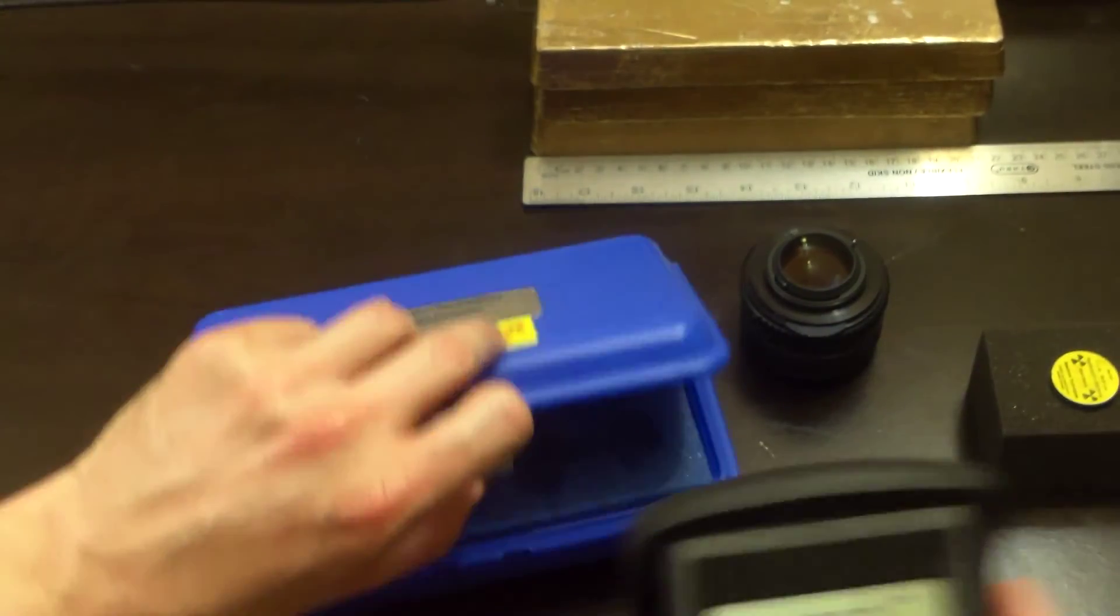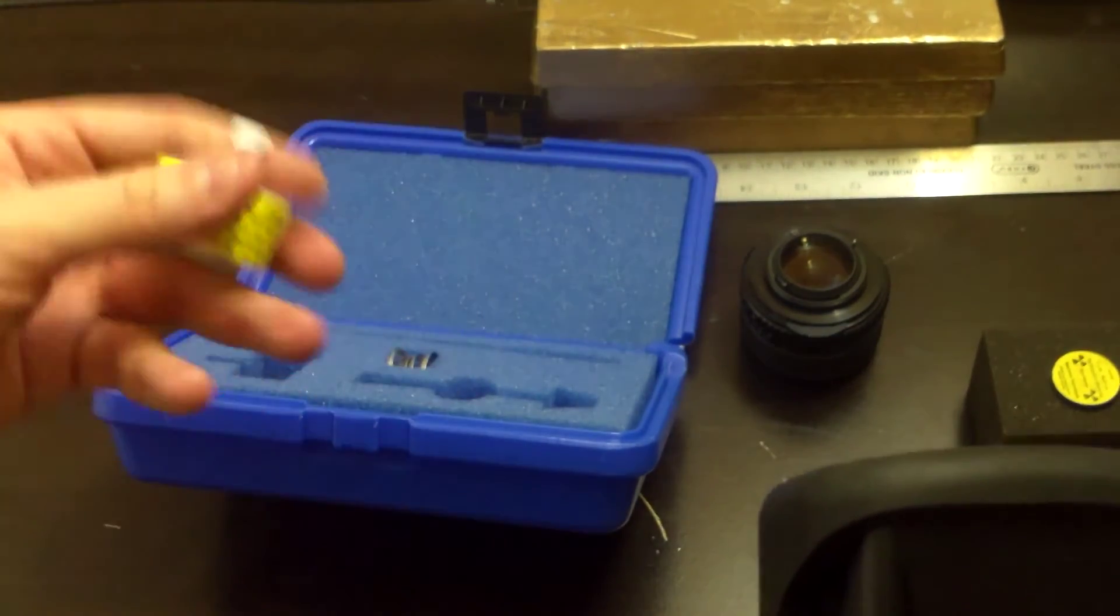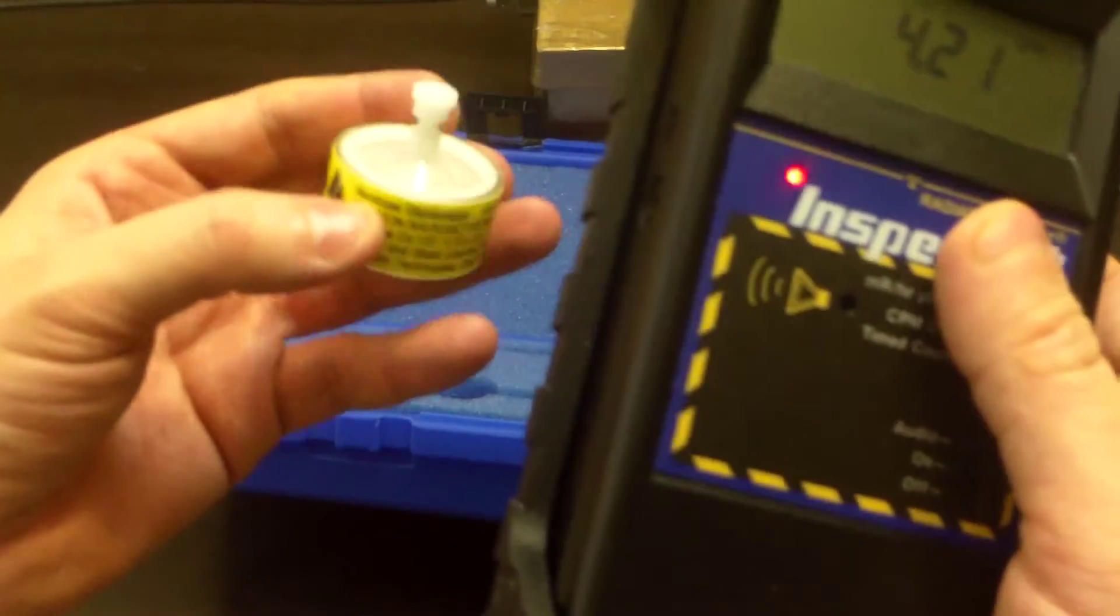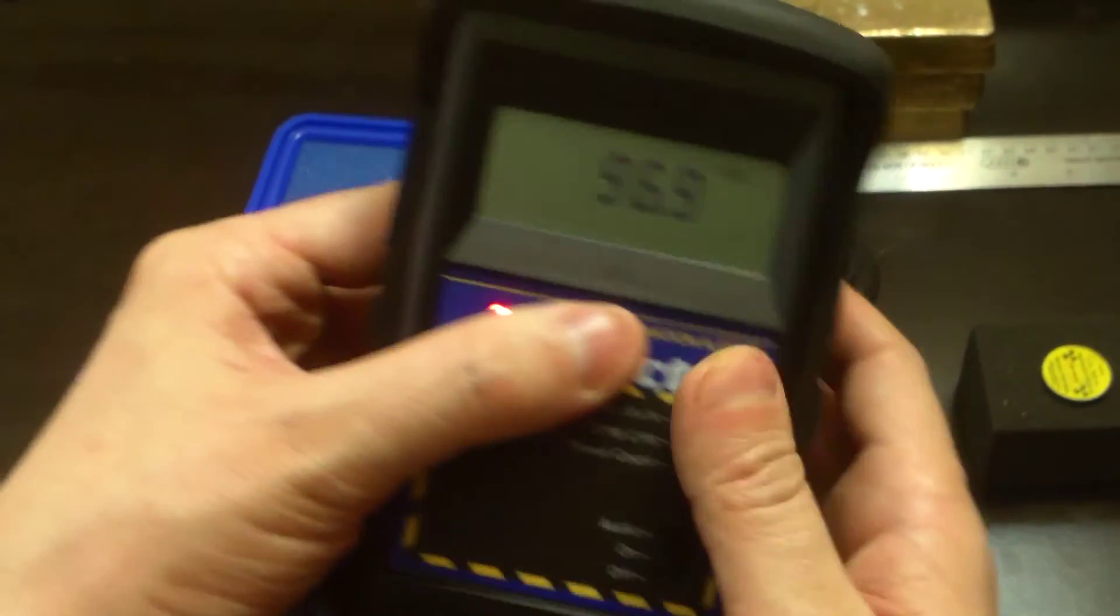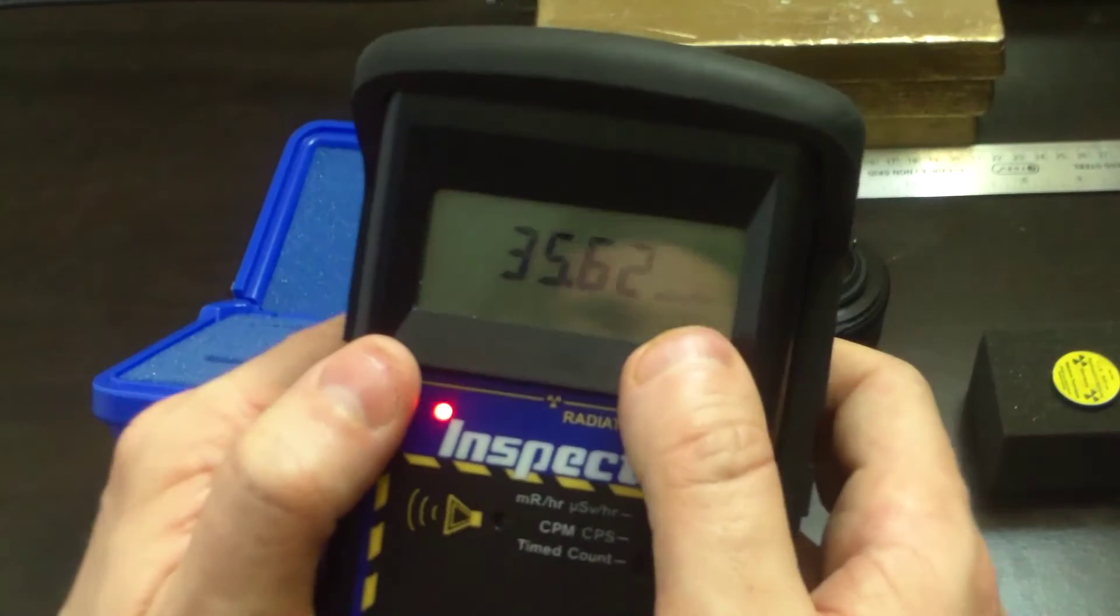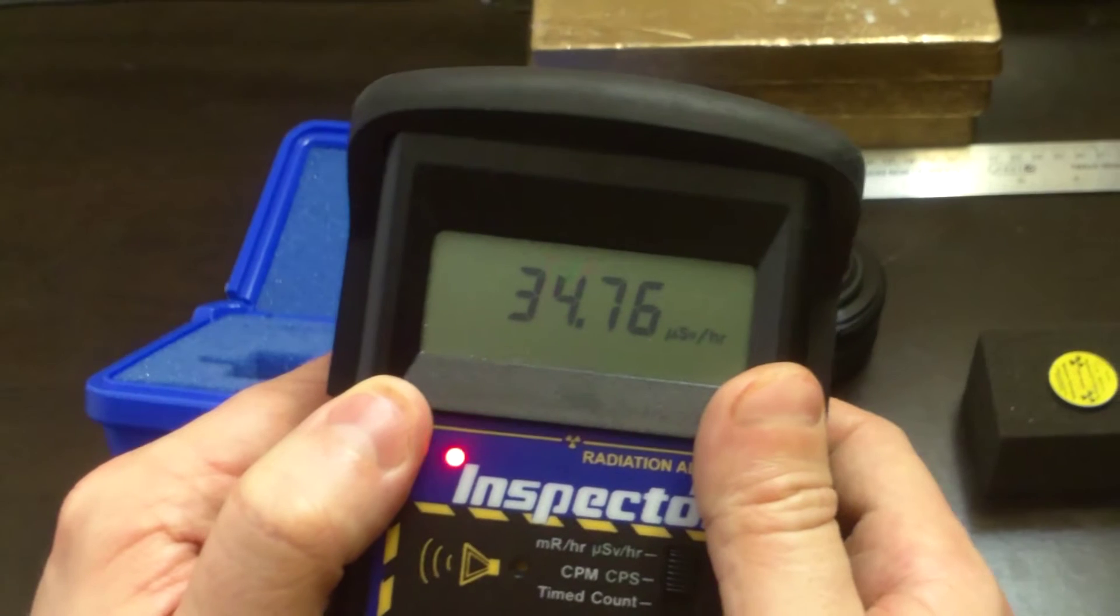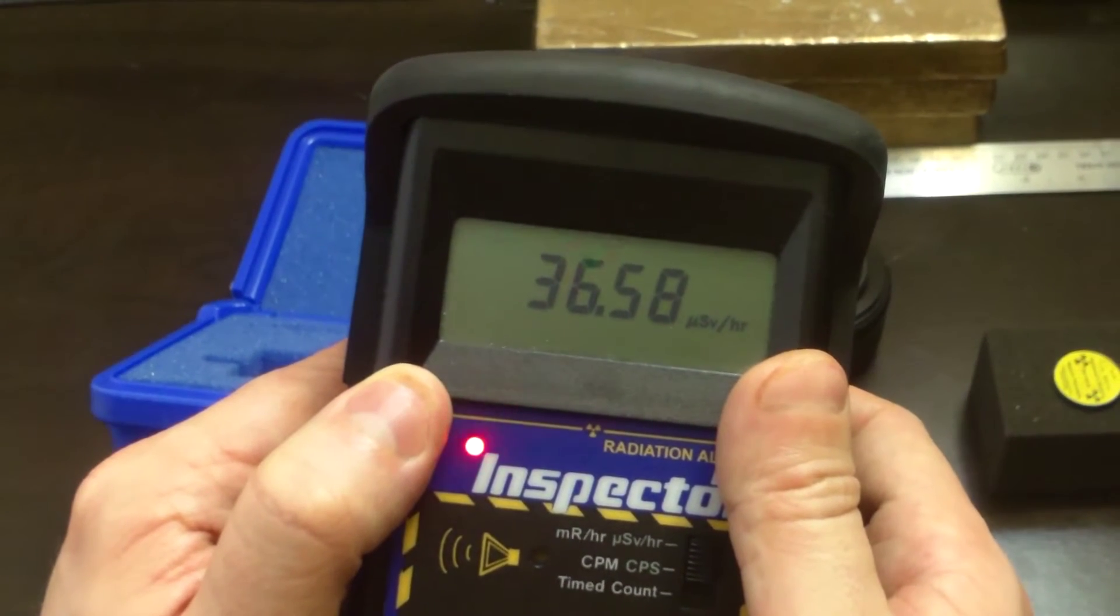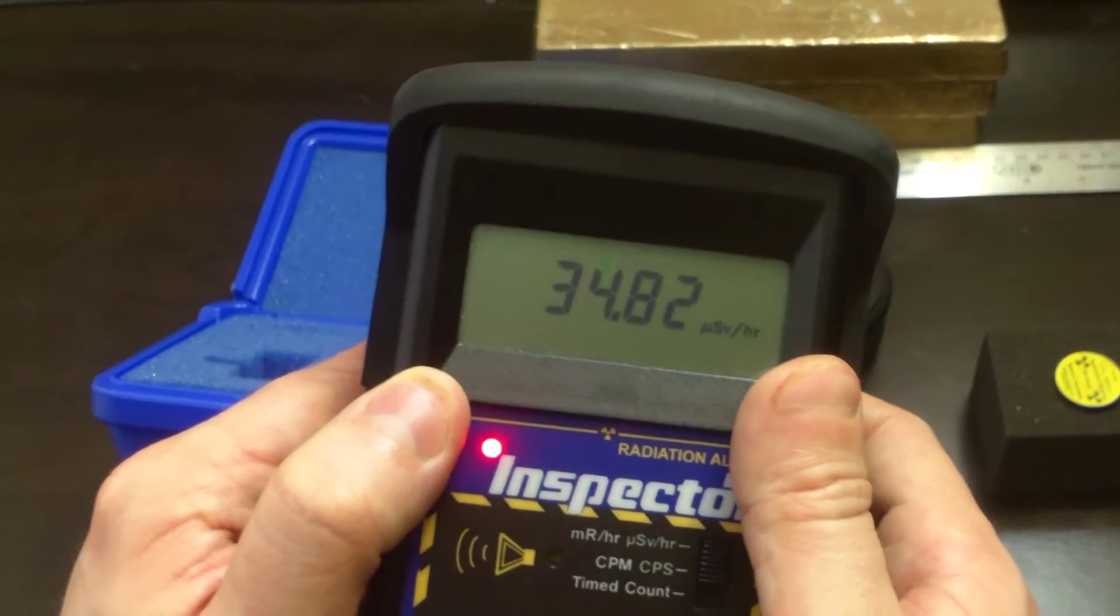Now let's take my hottest source of all, which is probably this guy right here. This is a 10 microcurie, 370 kilobecquerel Cs-137 source used to make barium-137M samples. This is the hottest. Put it back in dose-specific mode, make sure that's perfectly aligned. This is my hottest. 35, 34, 35 again, 36 microsieverts, 34 microsieverts. This is per hour.